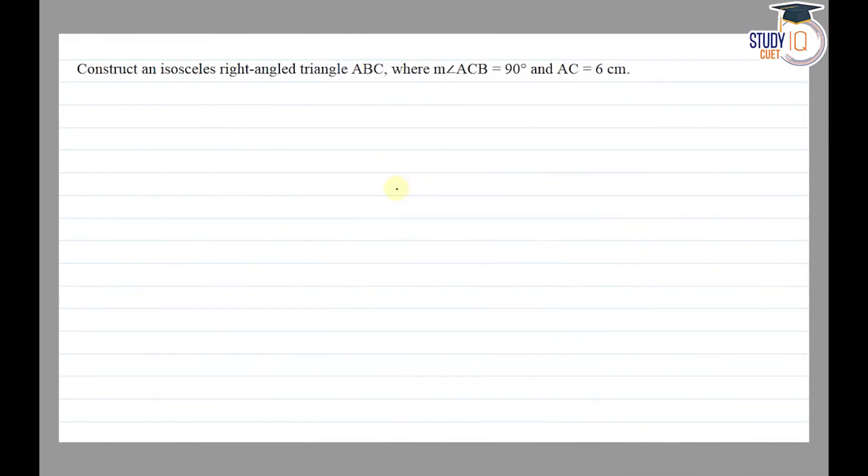Hello everyone. This question appears in Class 7th NCERT chapter of Practical Geometry. This is the third question of exercise 10.5. The question says: Construct an isosceles right-angled triangle ABC, where angle ACB equals 90 degrees and AC equals 6 centimeters.